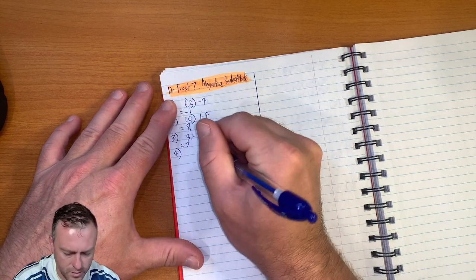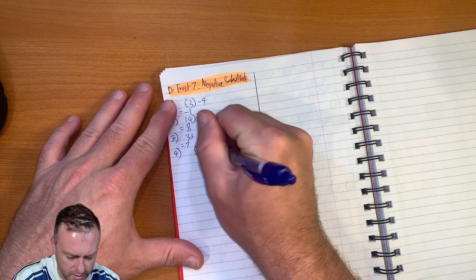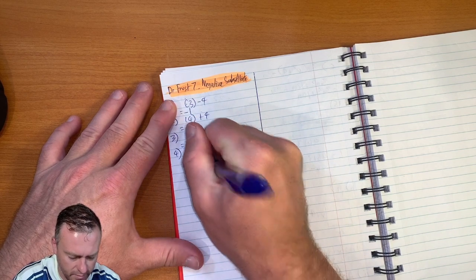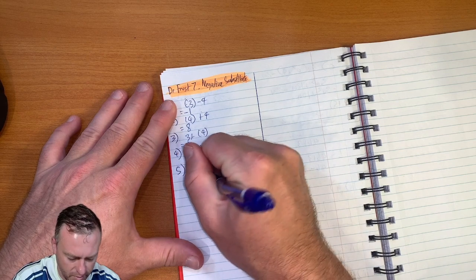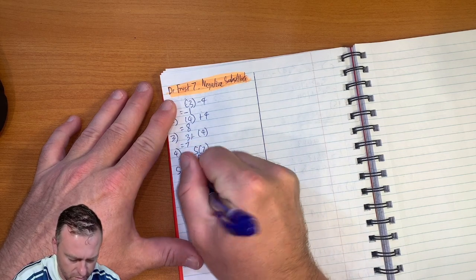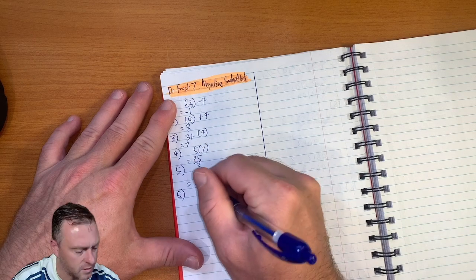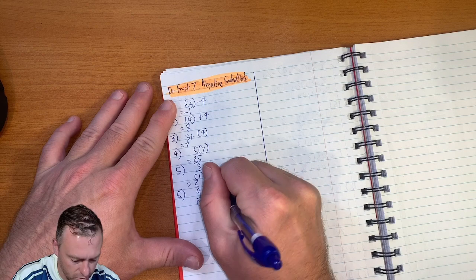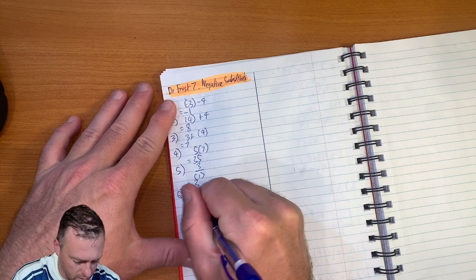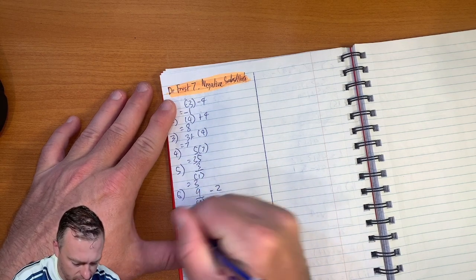Question four. Five lots of seven, which equals thirty-five. Question five. Three divided by one equals three. Question six. Nine divided by three, take away two, which equals three, take away two, which equals one.